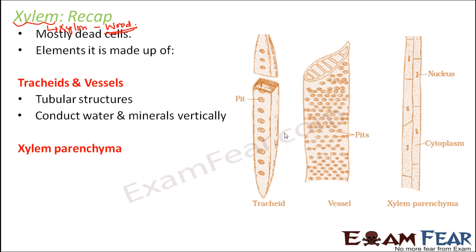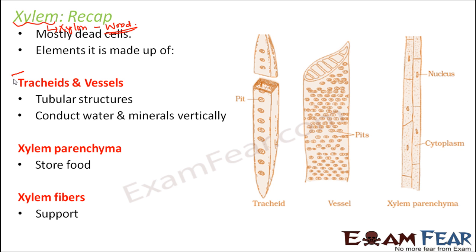Next is xylem parenchyma, which does not help in conducting water — instead, it helps in storage of food. The last element is xylem fibers, which are dead cells that provide mechanical support. So tracheids, vessels, xylem parenchyma, and xylem fibers are the important elements of xylem. Out of these, only tracheids and vessels help in transport; the other two provide structural support and food storage.